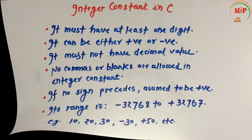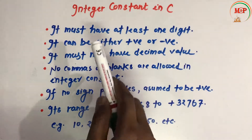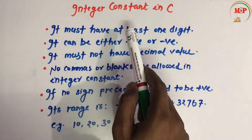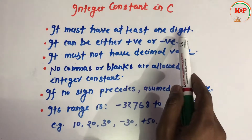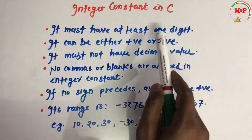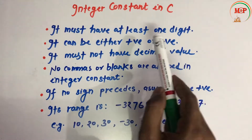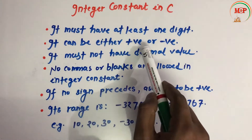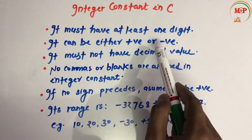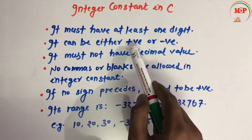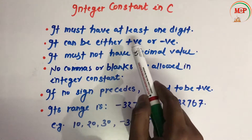Now let's see the integer constant in C language. It must have at least one digit. It can be either positive or negative.